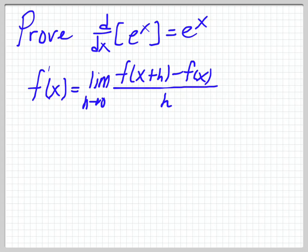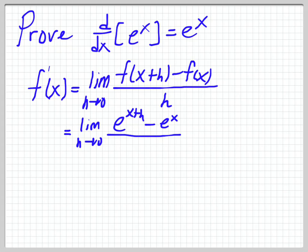So my function in this case is e to the x. So what I have is the limit as h goes to 0 of e to the x plus h minus e to the x over h. I can break this up a little bit because I have this exponent x plus h. Remember, if you're adding exponents, that rule is multiplying — so e to the x plus h is the same as e to the x times e to the h.